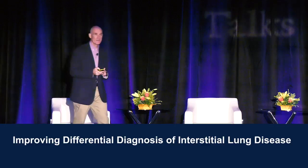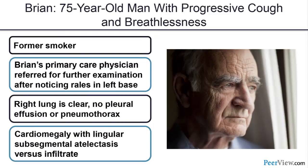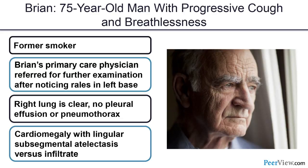I'll kick off the first of three talks on the approach and diagnosis of patients with interstitial lung disease. We'll start with a hypothetical case: Brian is 75 years old and presents with cough and breathlessness. He's a former smoker whose astute primary care physician notices crackles in the left base. On radiograph the lung is clear, no pleural effusions or pneumothorax, maybe some cardiomegaly and lingular atelectasis versus an infiltrate.